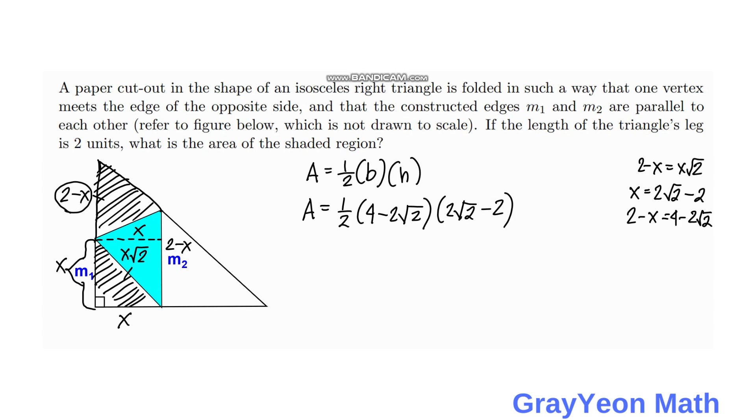Then we simplify this, then we have area is equal to 1/2 times 4 times 2√2. That would be 8√2. Then this becomes 2 times 2, 4 times 2. That would be 8, but negative.